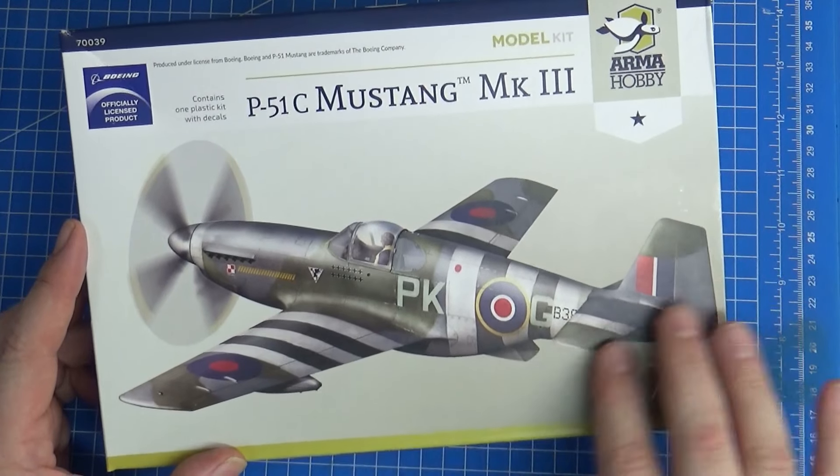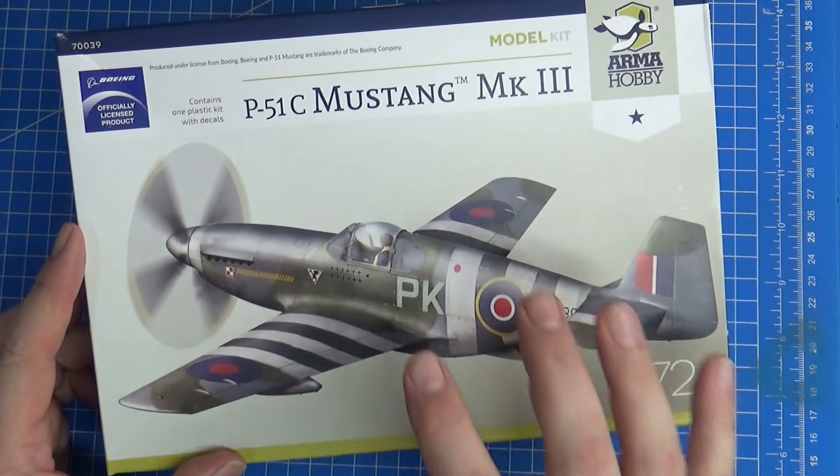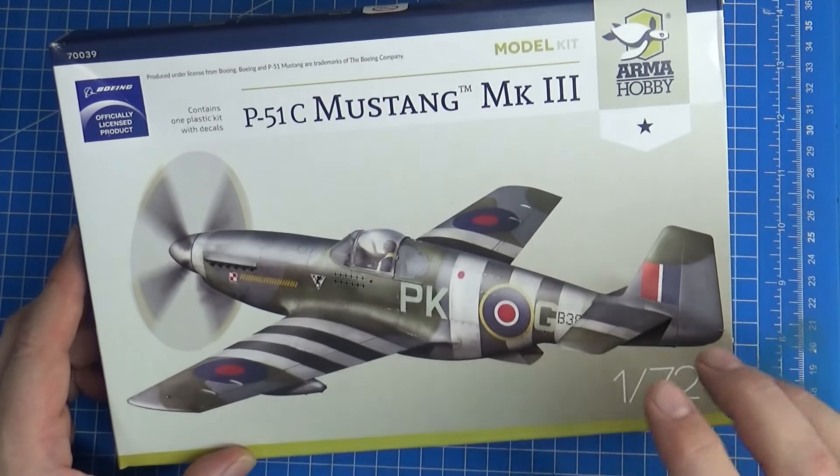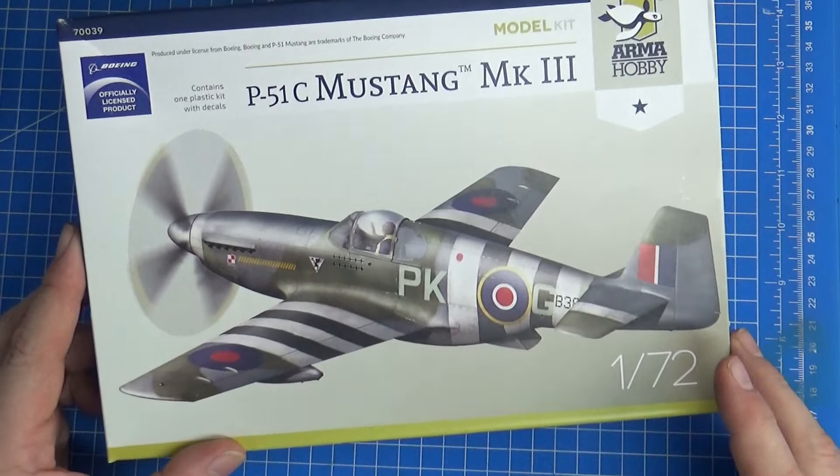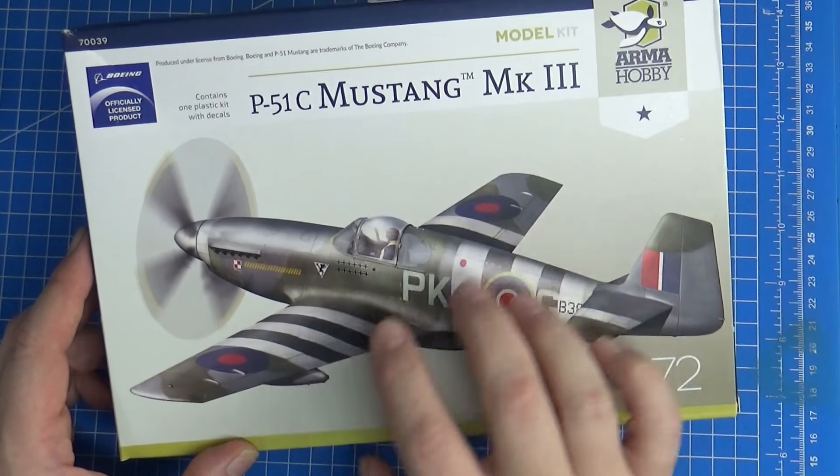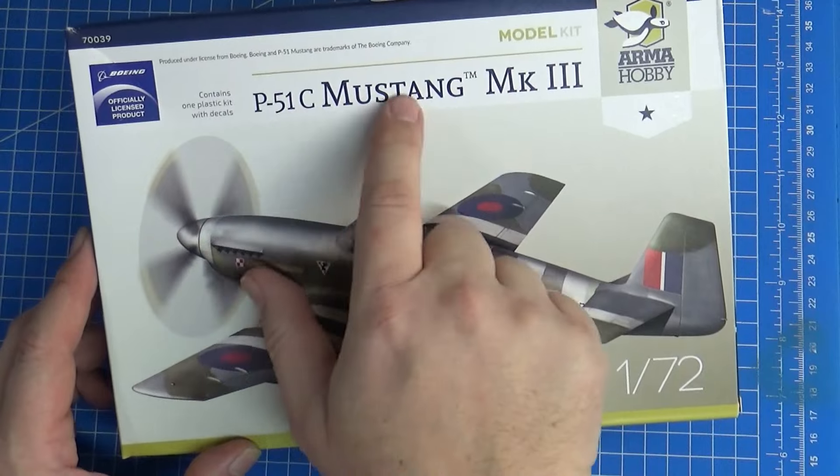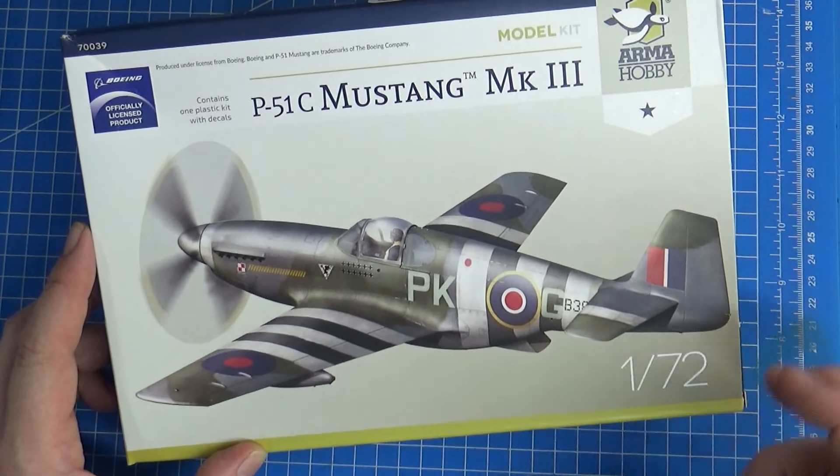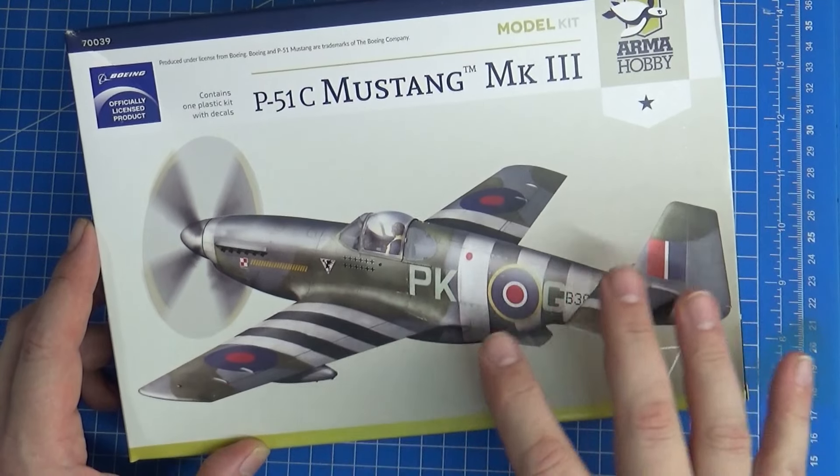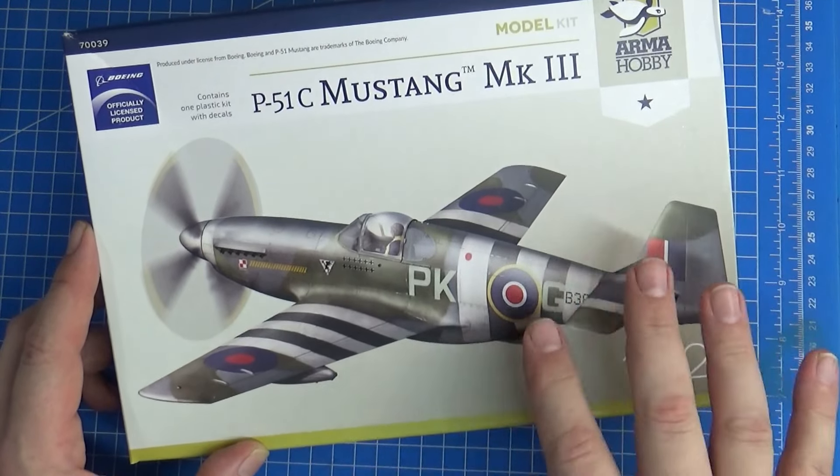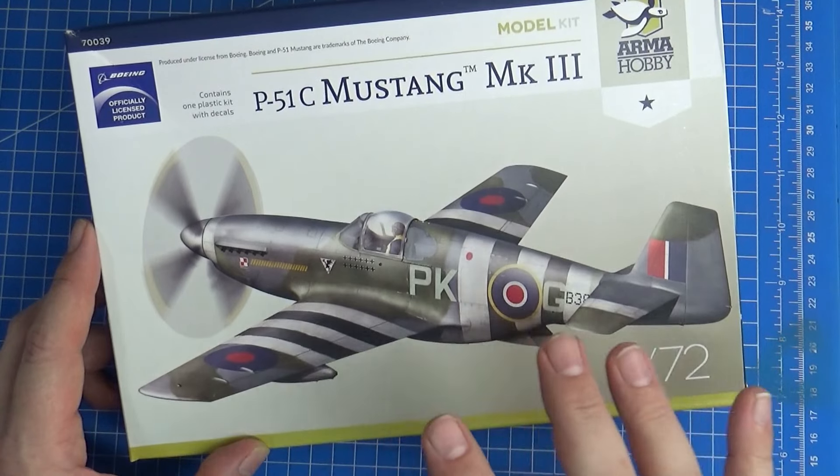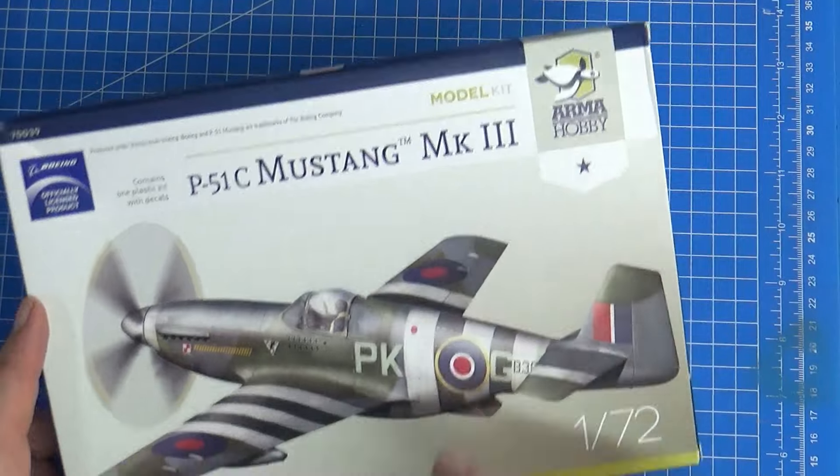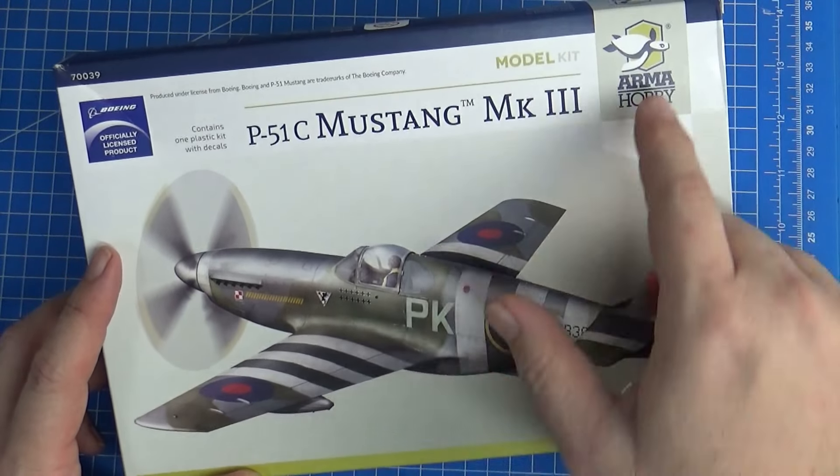If you follow or listen to any of the major modeling podcasts like Screw Cutters Union, Plastic Model Posse, or On The Bench here in Australia, they do something called the Moosaroo Cup every year—a friendly competition where they all build one kit. This year for 2023, they were given one of these new 1/72 Mustangs.